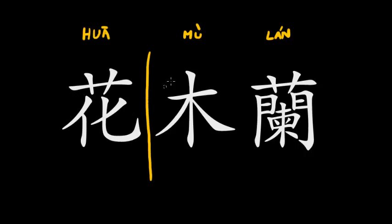Let me show you how to write these characters one by one, and then I'll explain their structure — what they are made up of and why. There are certain rules to write Chinese characters; you can't just start writing strokes as you wish. There is a fairly complicated system, but let me first write the first character and then go into more detail.